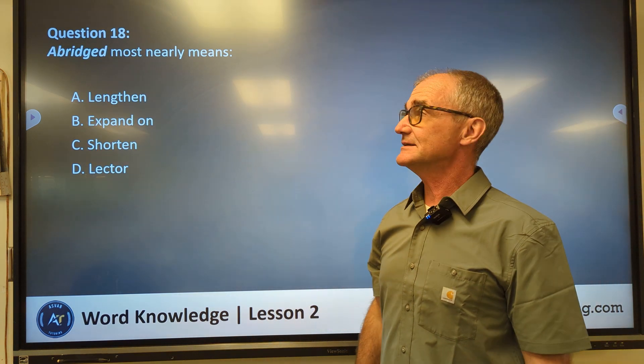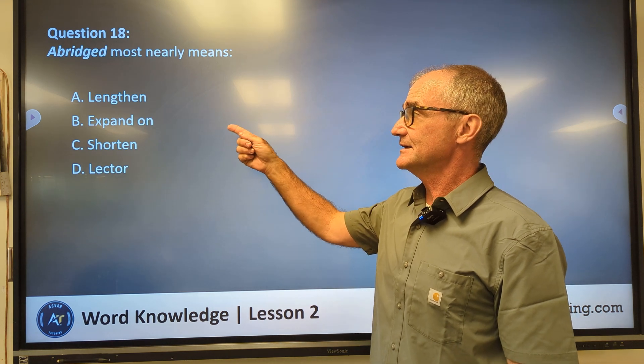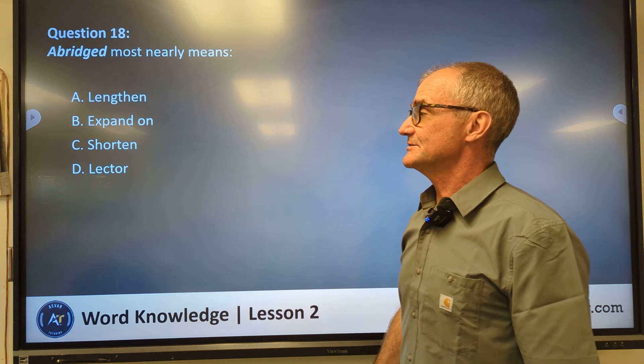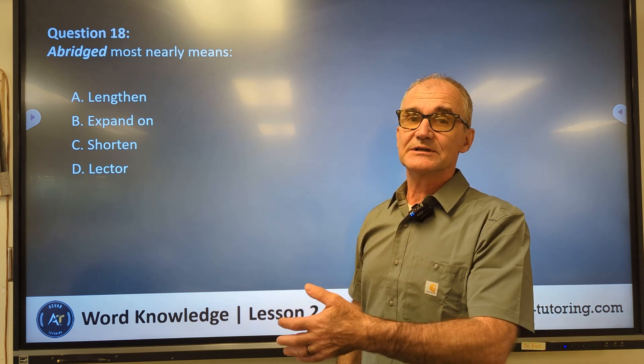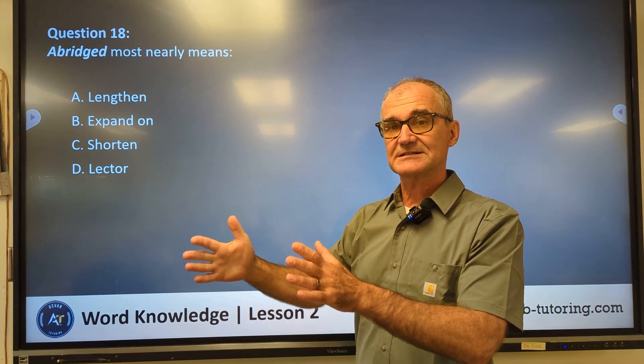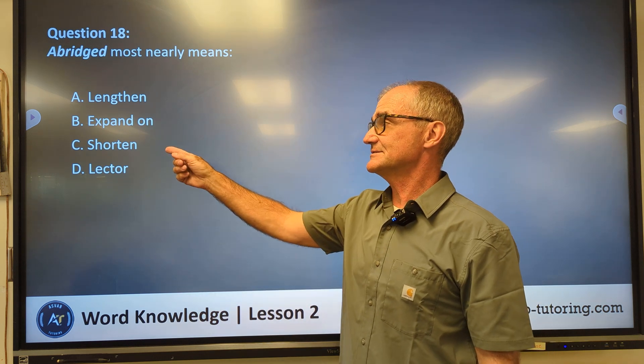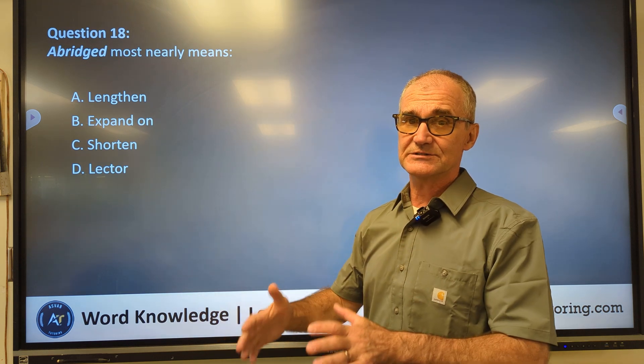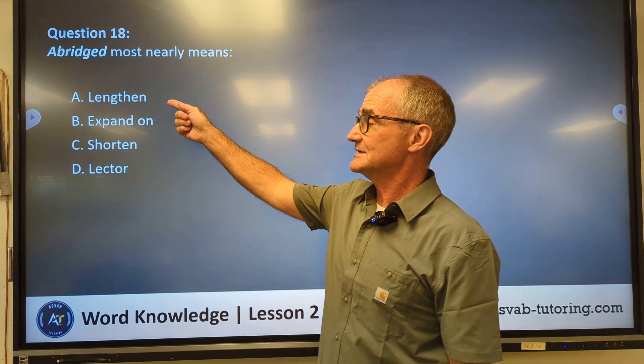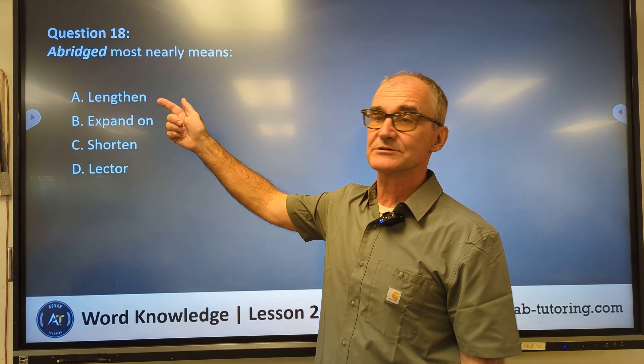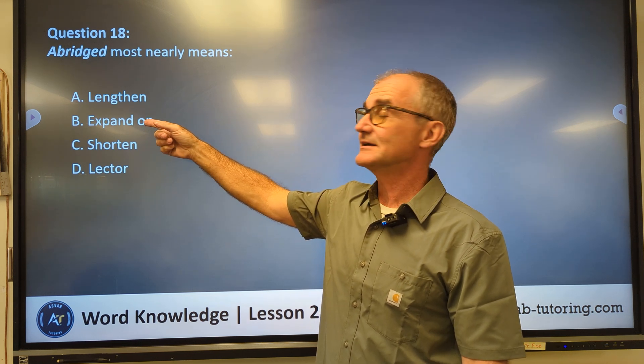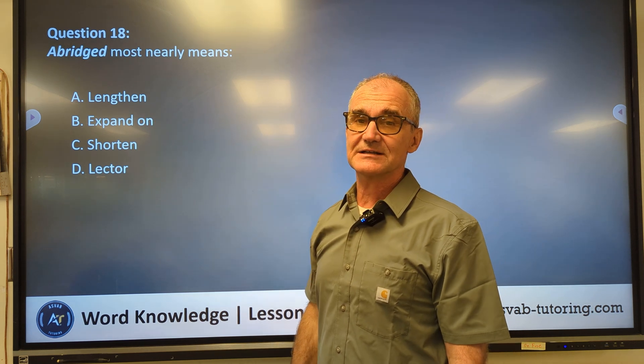Number eighteen, abridged, most nearly means lengthen, expand on, shorten, lector. So you might see an abridged book. An abridged book is a shortened book, so it takes the whole thing and cuts it down to a smaller size. Correct answer is answer C, to shorten. To abridge something is to shorten it down. But I see up here as well, if I don't know what those words mean, but I do know what lengthen and expand mean, A and B mean the same thing, so those can't be the correct answers.